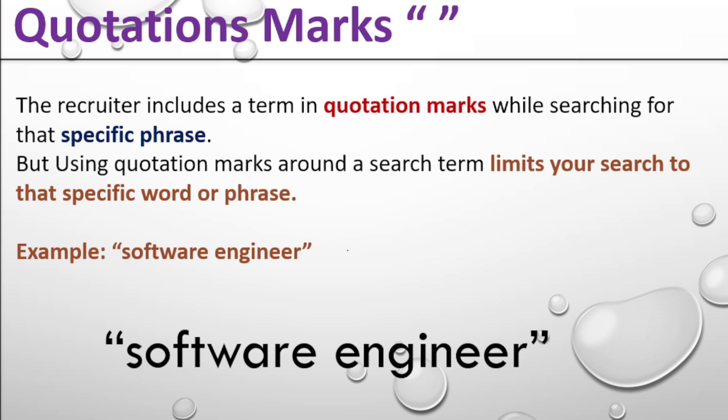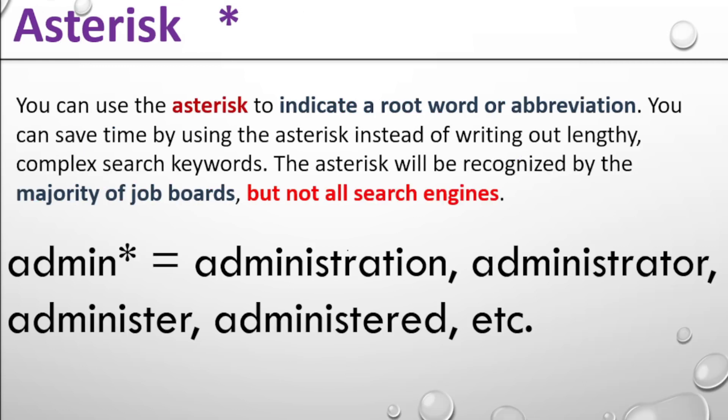Next is the asterisk. You can use the asterisk to indicate a root word or abbreviation. You can save time by using the asterisk instead of writing out complex search keywords. The asterisk will be recognized by the majority of job boards, but not all search engines. Example: if you want to search for administrator or administration, use 'admin*' and you will find all root words.